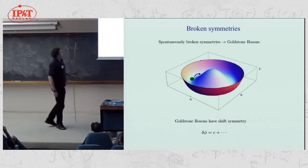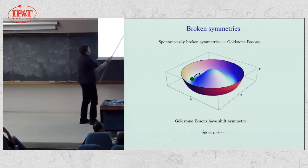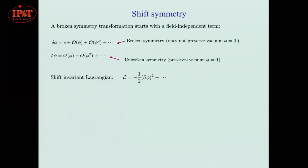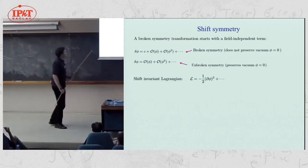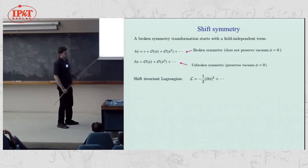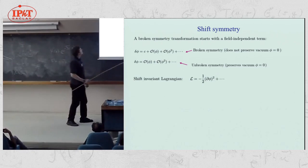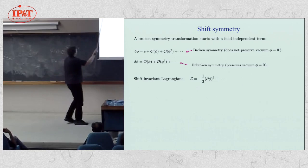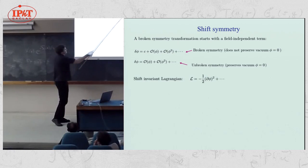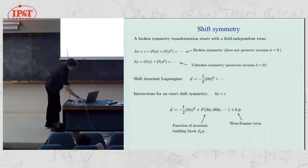We know that when we have broken symmetries, we always have a Goldstone boson. A Goldstone boson is some flat direction in field space, which means we have a symmetry that starts with just a shift of the field. The general symmetry transformation is going to be a shift of the field, maybe with some higher order stuff. That's telling us that the vacuum is not preserved — the phi equals zero configuration is not preserved — whereas an unbroken symmetry, which preserves phi equals zero, starts with a field-dependent part. The fact that you have this leading constant part tells you that the kinetic term has to start with a massless kinetic term, and then the interactions will be determined.